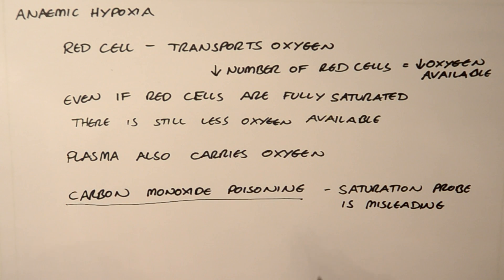It may read 100%, for example. But this patient is hypoxic. This is because carbon monoxide displaces oxygen from the red cell because it preferentially binds to haemoglobin. But it will still read on the pulse oximeter, so you can get a misleading reading. Always remember this.